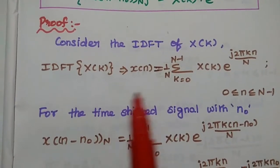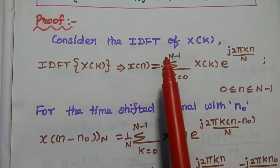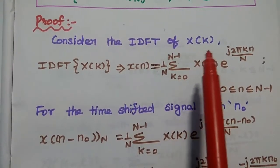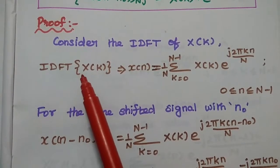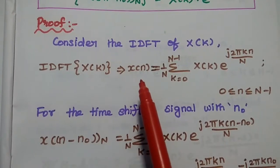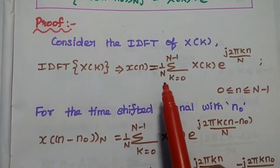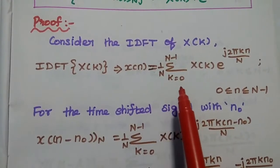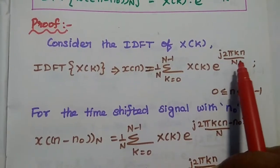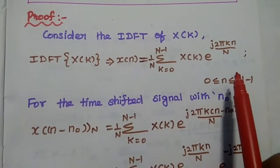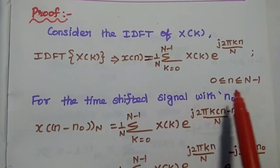Let's prove this property. We consider the inverse discrete Fourier transform of the signal X(k). The inverse DFT of X(k) is represented as x(n), and the formula is: x(n) = (1/N) × summation from k=0 to N−1 of X(k) × e^(+j2πkn/N), where n varies from 0 to N−1.